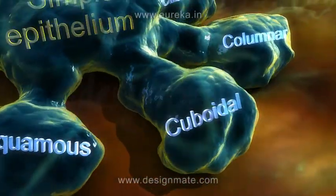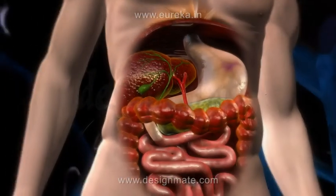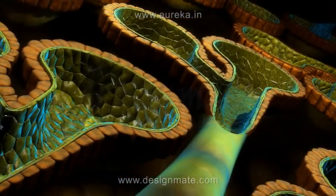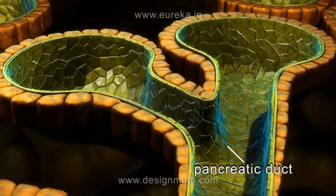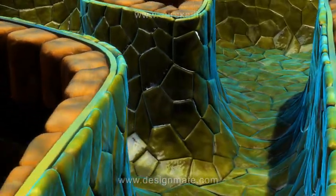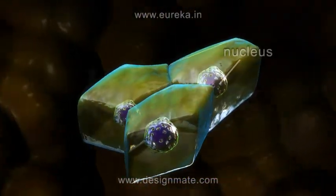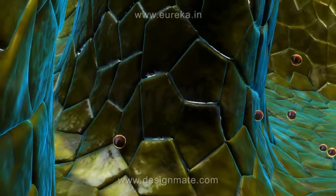Another type of epithelial tissue is the cuboidal epithelium. It is found in the pancreas. In a cross section, we can see the pancreatic ducts closely and find that they are made up of cuboidal cells which possess a central spherical nucleus. At the surface, the cells have a polygonal outline but appear cuboidal in vertical section. They help in secretion of enzymes.